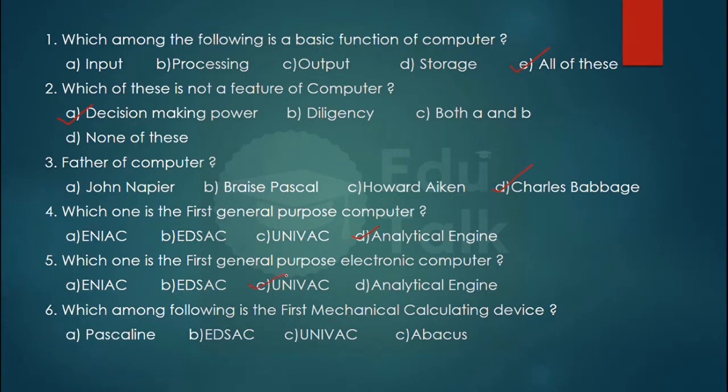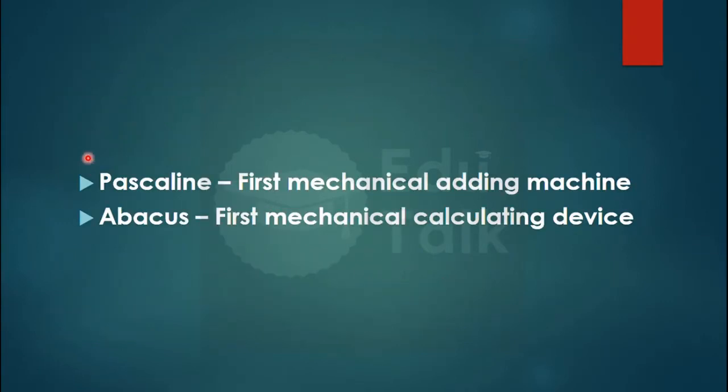Which among the following is the first mechanical calculating device? Pascaline is the first mechanical adding machine. Abacus means first mechanical calculating device. The answer is option C.